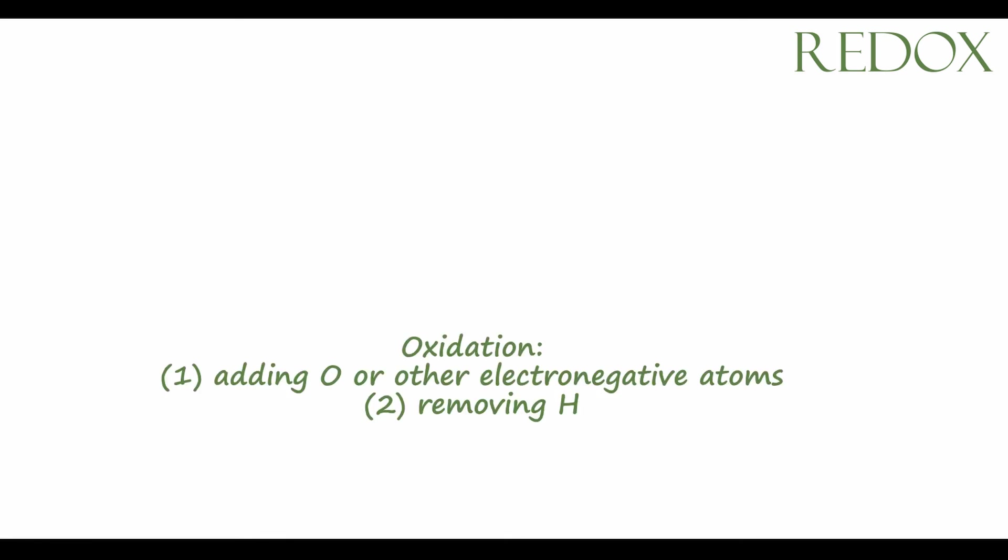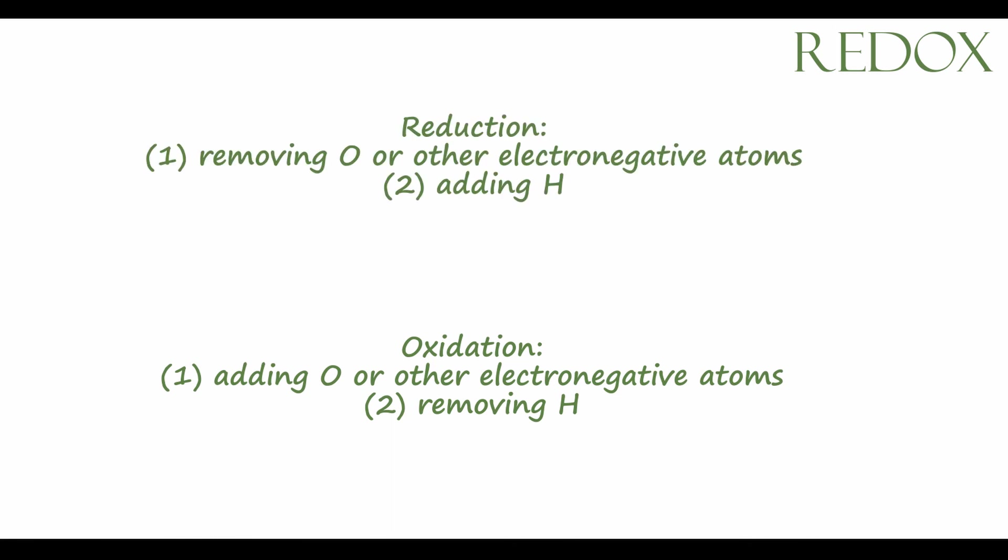Oxidation in the context of organic chemistry is either adding oxygen, or maybe another electronegative element like a halogen, to a compound, or removing hydrogen from a compound. Reduction is basically just the opposite: removing oxygen or a halogen from a compound, or adding hydrogen.